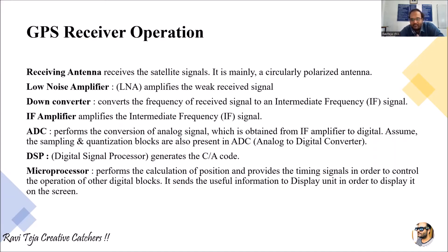Next comes the down converter. It converts the frequency of the received signal to an intermediate frequency, or IF signal. In satellite communication technologies, an up converter is used when sending a signal to a satellite, while a down converter is used when receiving a signal from the satellite. Here we are down converting the received signal to an intermediate frequency.